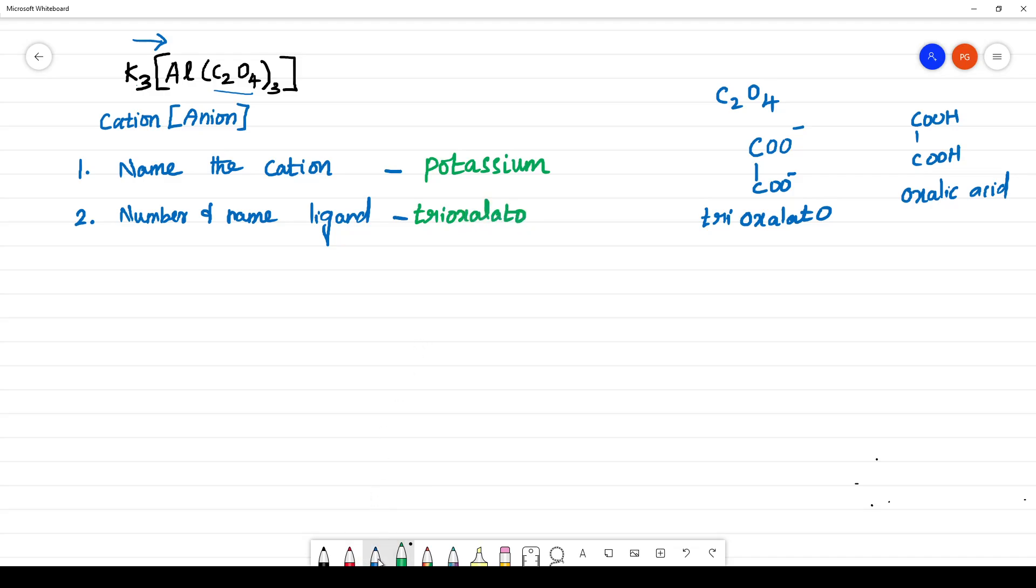The next is you have to name the central atom. What is the central atom? Aluminium is the central atom. You have to name the central metal atom. What is the central metal atom? Aluminium.